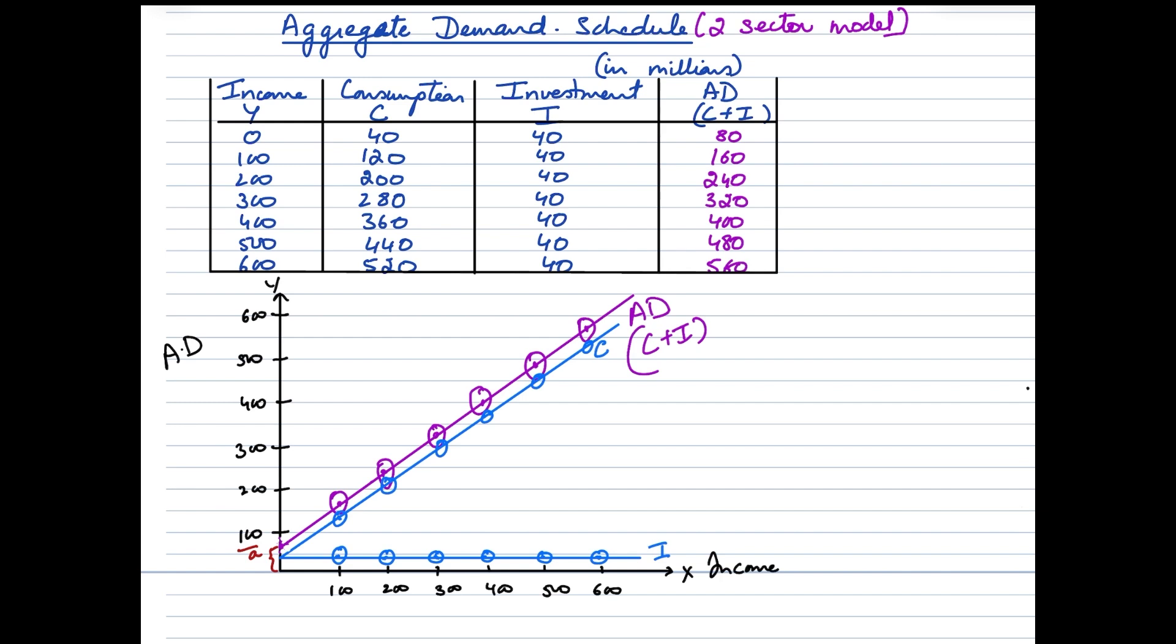Now when we take a look at the diagram again, both the curves, which is aggregate demand and consumption are upward sloping or positively sloped. It indicates that as the income increases, expenditure would also tend to increase. In this case, aggregate demand would also increase.